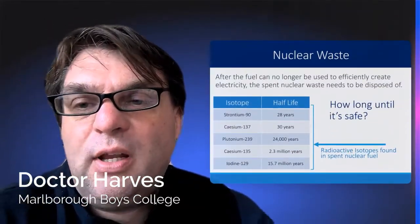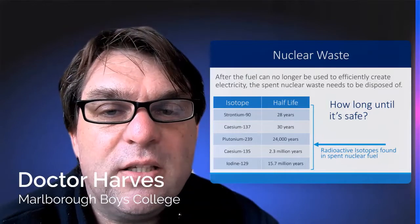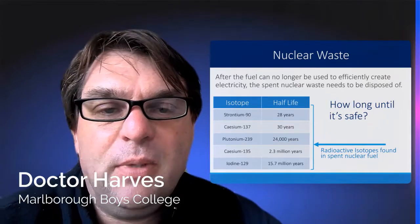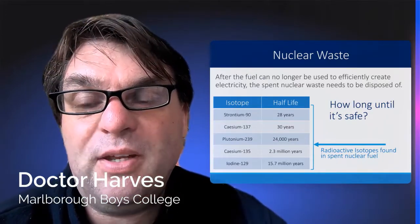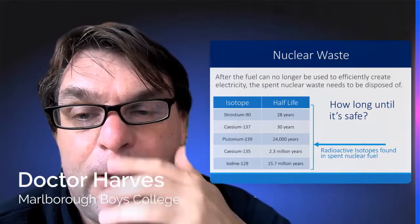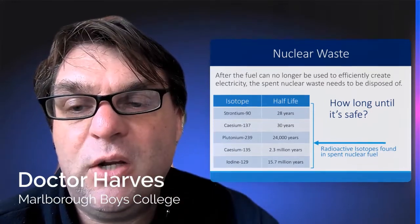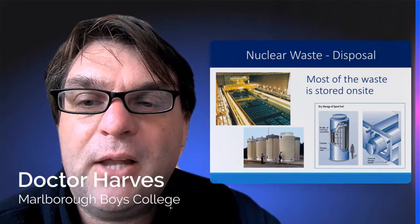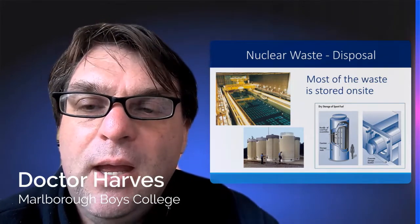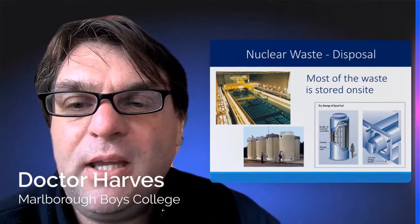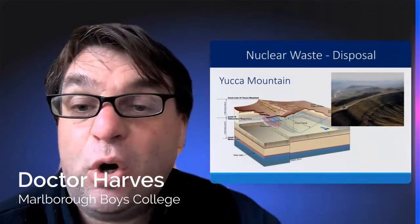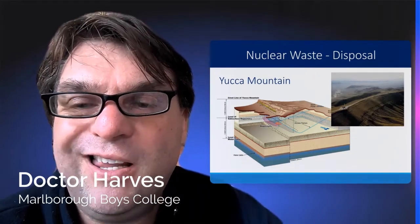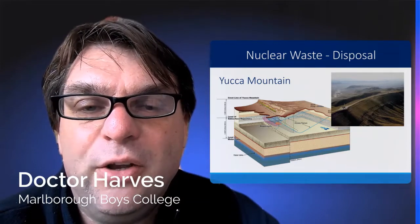The major problem with nuclear power plants is nuclear waste. A whole range of different isotopes are formed, some lasting for 15.7 million years, so they must be stored safely to prevent radioactive poisoning. Most waste is stored on site at nuclear power plants. Japanese power plants send waste overseas — for example, to Australia, where deserts are geographically stable with no earthquakes, allowing nuclear waste to be stored safely underground.